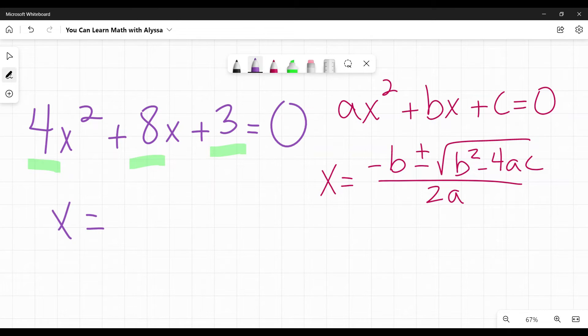I know that x will be equal to the opposite of eight, which in this case would make it a negative eight, plus or minus the square root of eight squared minus, and it's all these three multiplied together, four times a, which is four times c, which is three, all over two times my a again is four.